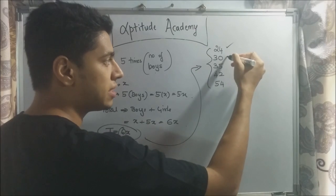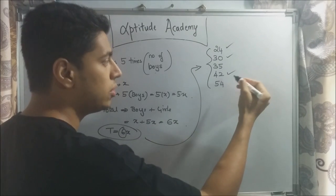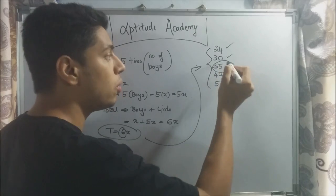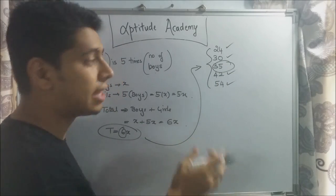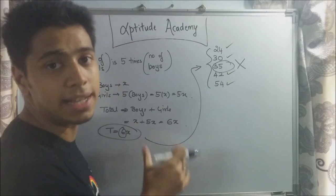6 fours are 24, 6 fives are 30, 6 sevens are 42, and 6 nines are 54. So 35 is the only one that is not divisible by 6. That means this can never be the total number of students in this classroom.